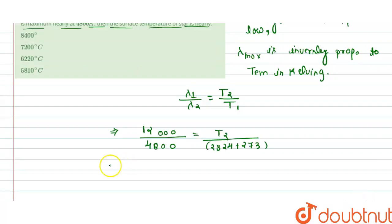So T2, we got the value that is T2 equals to 6492.5 Kelvin.